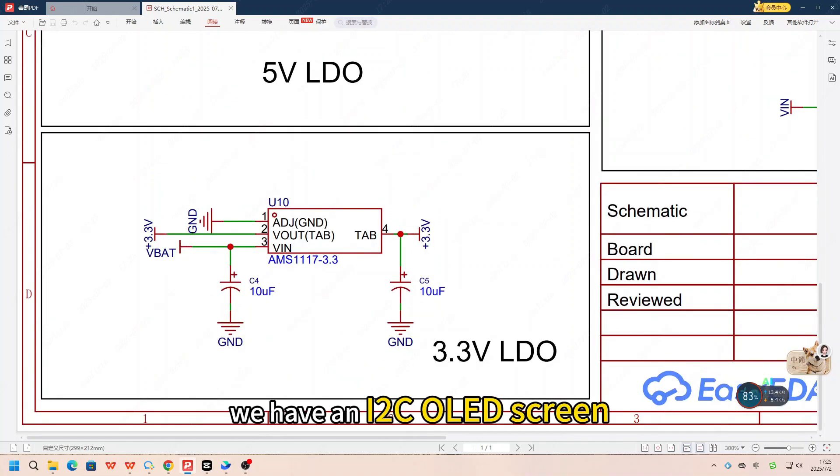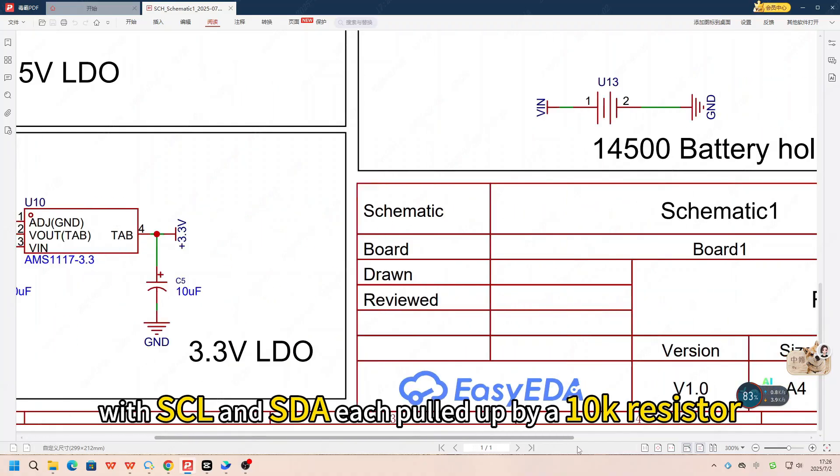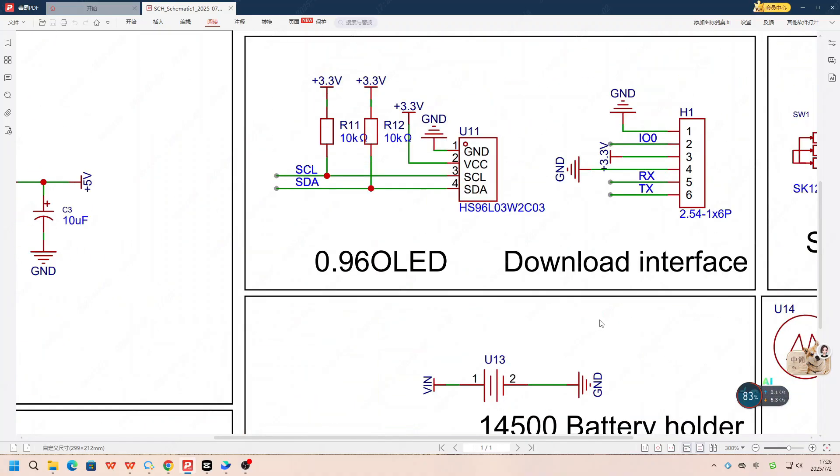To the right, we have an I2C OLED screen, with SCL and SDA each pulled up by a 10K resistor. The screen runs on 3.3V.